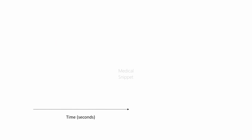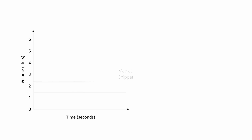Let's first draw a graph with time on the x-axis and volume in liters on the y-axis. Let us mark from 0 to 6 liters. Next we will draw four horizontal lines: the first between 1 and 2 liters, the second between 2 and 3 liters, the third line at 3 liters, and the fourth line at 6 liters.